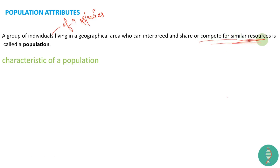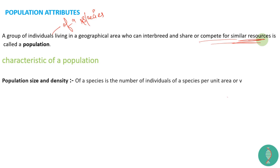They also share or compete for similar resources. For example, humans compete for similar resources among themselves. Dogs have different resource needs. Fish living in water have their own resource needs. These three factors — same species, ability to interbreed, and competing for similar resources — are what define a population.